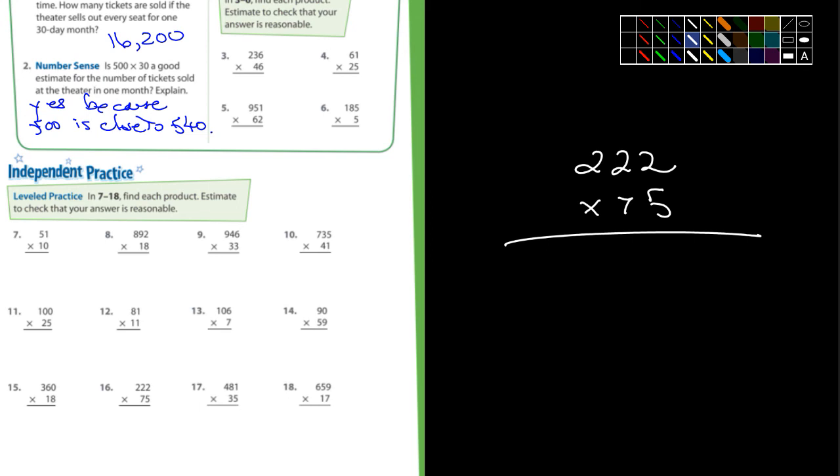So 5 times 2 is what? 10. Put down the 0, carry the 1. 5 times 2 is 10 again, plus 1 is 11. Put down the 1, carry the 1. 5 times 2 is 10, plus 1 is 11. All right. All right. So I'm done with the 5s.